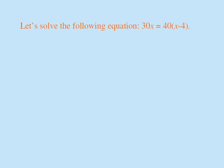We'll solve this equation. 30X is equal to 40 times (X minus 4). We start with the equation. We distribute 40 and get 40X minus 160.